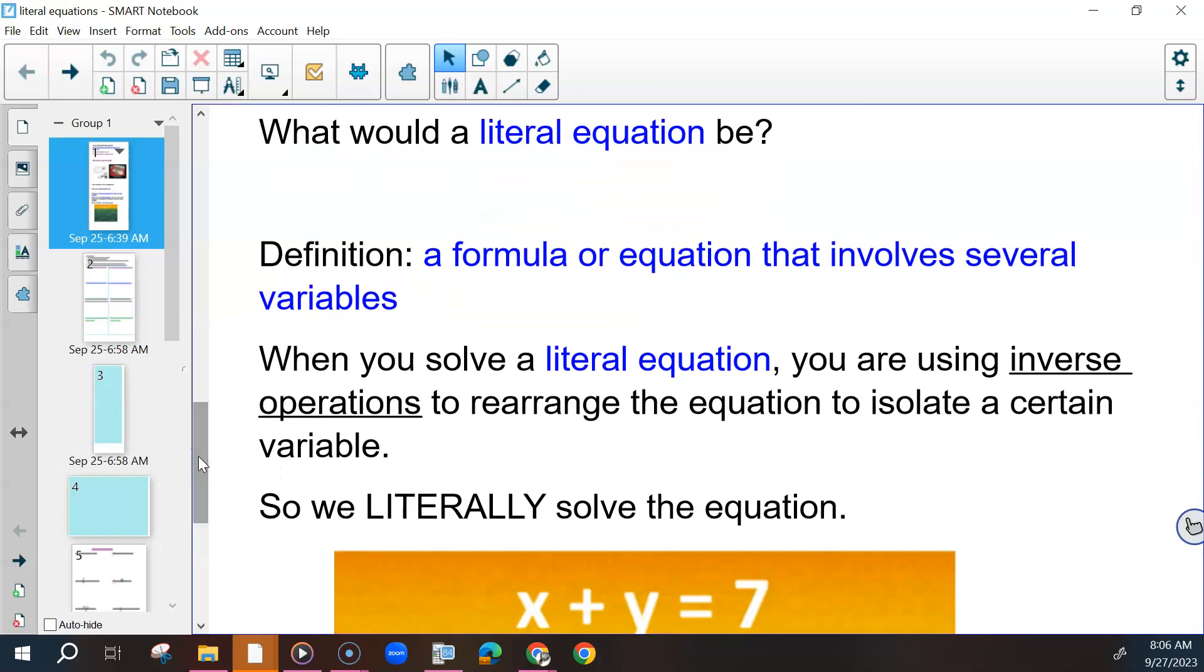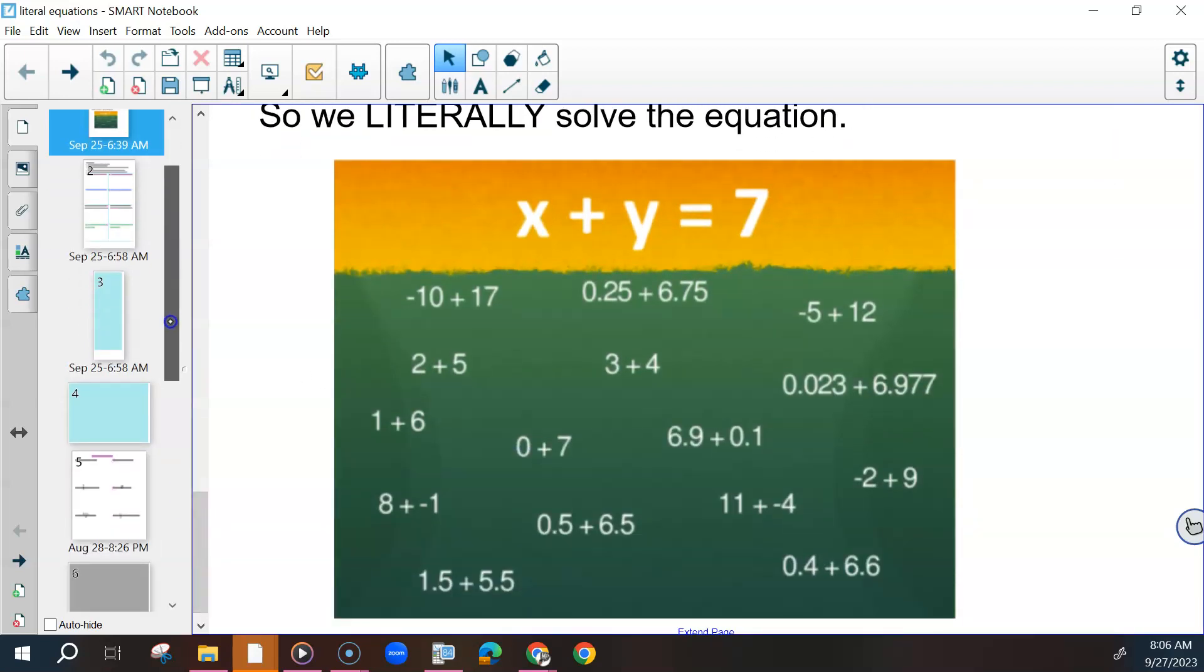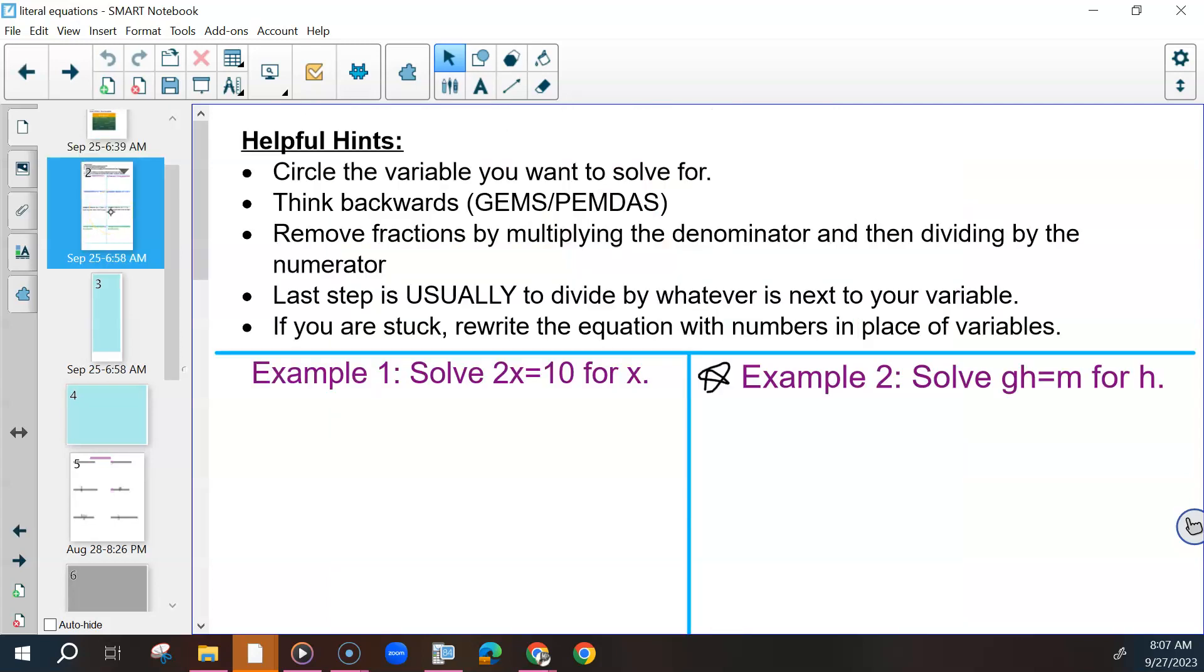But when we talk about a literal equation in math, we're solving it like a normal problem. So that part is the actual, but then we solve the equation like a normal problem, but we don't get a numerical answer. That's where it's a little tricky because we're just solving like a normal problem, but to get an answer that has letters in it or variables. We could put any amount of numbers in there to make it equal, but we will never know what those numbers are. So let's do a couple of these. Think about these helpful hints, so take a second, read through those.